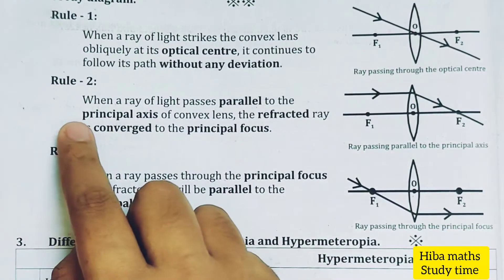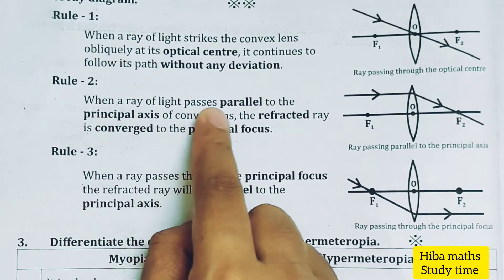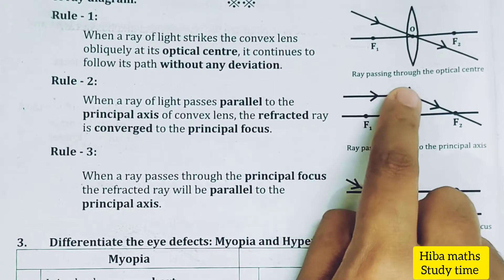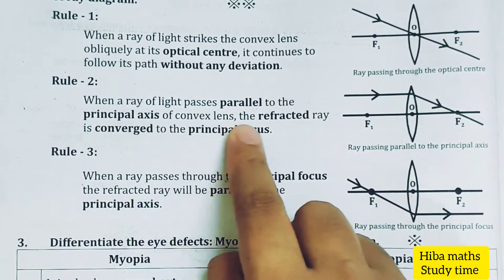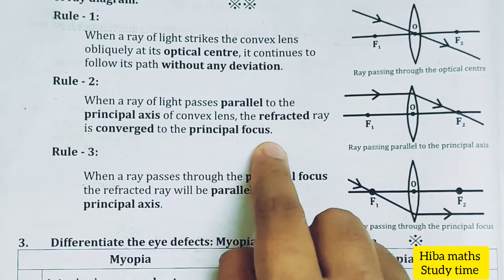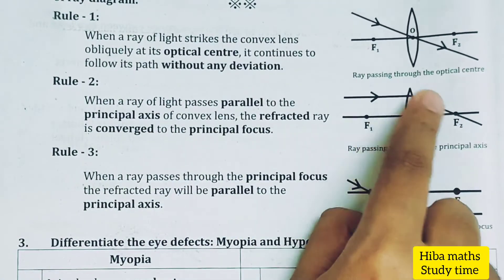The second rule is: when a ray of light passes parallel to the principal axis, the refracted rays converge to the principal focus. Converged is downwards, correct?